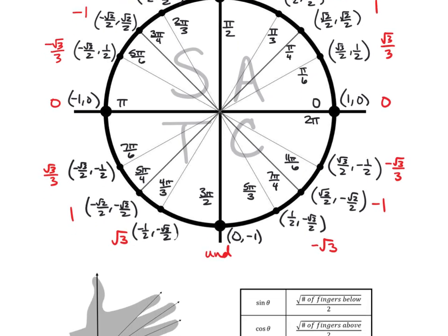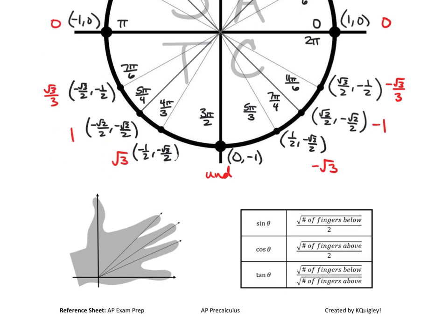I've taught you a few tricks for this. Remember, we have the hand trick, where if you were doing quadrant 1, the first, your ring finger represents pi over 6, your middle finger represents pi over 4, your index finger represents pi over 3, your pinky would represent 0, and your thumb represents pi over 2. That's the entire first quadrant. And when it comes to the hand trick, here's the pattern again.